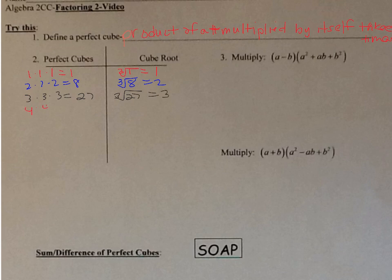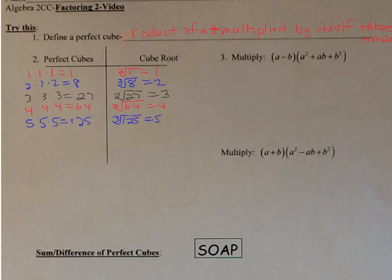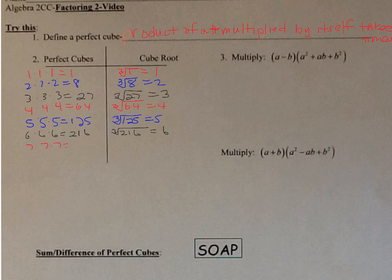4×4×4=64; cube root of 64 is 4. 5×5×5=125; cube root of 125 is 5. 6×6×6=216; cube root of 216 is 6. 7×7×7=343; cube root of 343 is 7. We could keep going, of course.